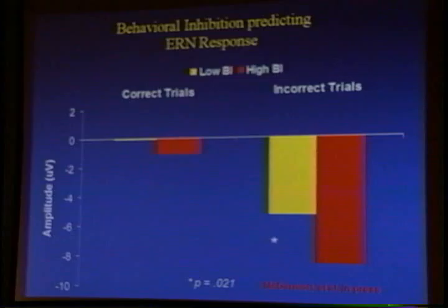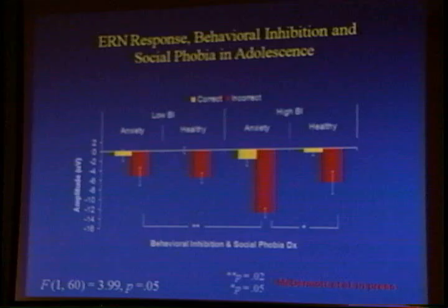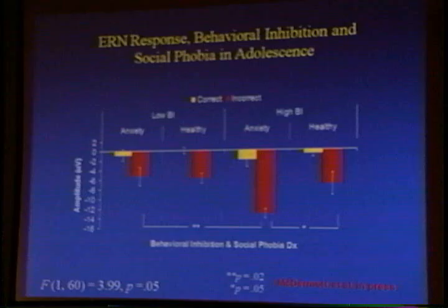The more interesting thing is if we divide up our behaviorally inhibited subjects — and remember, this was done while they were adolescents — into those who had a diagnosis of social phobia and those who did not have a diagnosis of social phobia, we actually find a significant interaction. Really, the place to look is on the right-hand side of the graph, between the healthy behaviorally inhibited and the behaviorally inhibited subjects who had a diagnosis of social phobia.